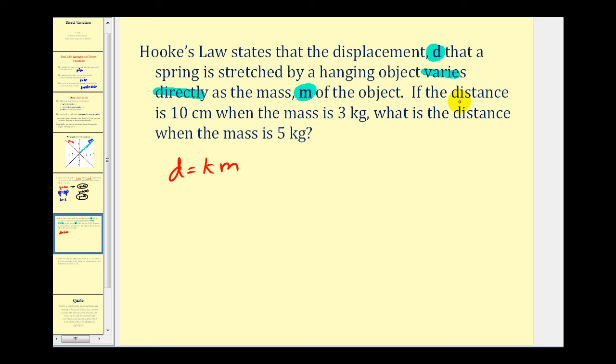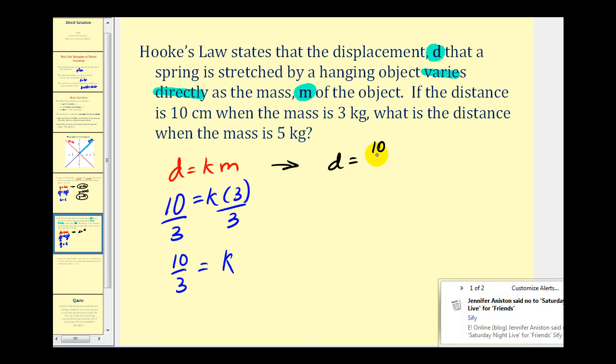Next, we're told that if the distance is 10 centimeters when the mass is 3 kilograms, what is the distance when the mass is 5 kilograms? So we can determine K because we know that D is 10 again when the mass is 3. So solving for K again, we know that K is equal to 10-thirds. So our direct variation equation for this problem is the displacement or distance is equal to 10-thirds times M.